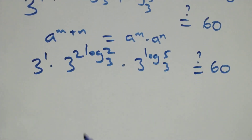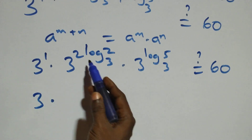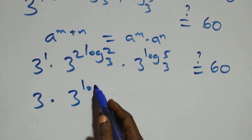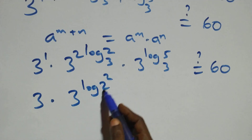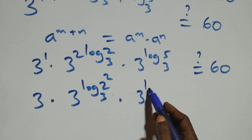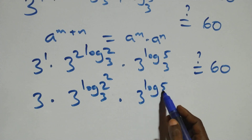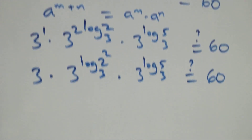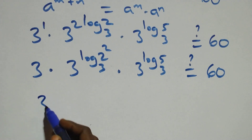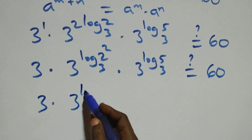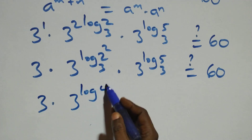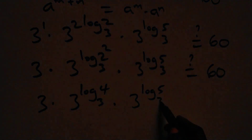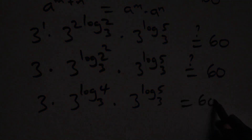Three to the power one is three. We revise using the power log rule: three raised to the power log two squared base three — which is log four base three — times three raised to the power log five base three. This becomes three times three raised to the power log four base three, times three raised to the power log five base three. Is it equal to sixty?